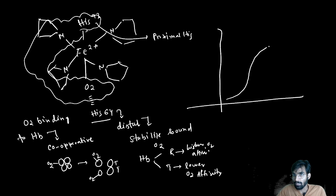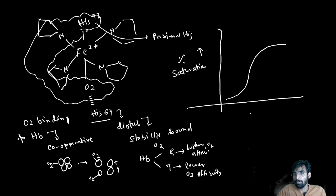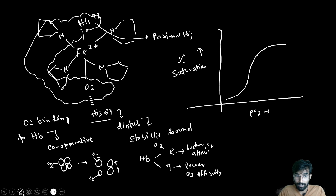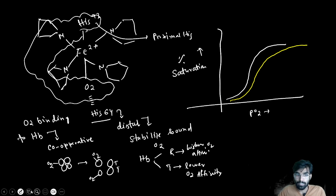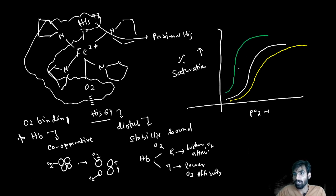The hemoglobin saturation curve — plotting percentage saturation against pO2 — can shift. A right shift means your hemoglobin has lower affinity for oxygen; a left shift indicates higher affinity. These shifts have physiological significance.